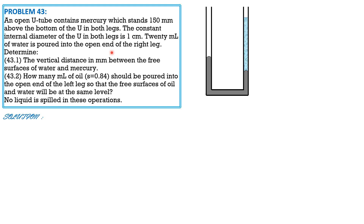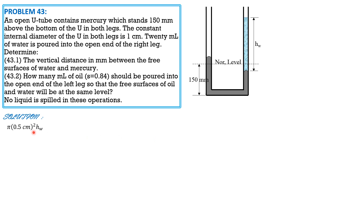For the solution: the normal level has mercury at 150 mm from the bottom in both legs. Since the legs have equal cross-sectional area, the rise in mercury on one side equals the fall on the other. We compute the height of water h_w: volume = π r² × h_w = 20 mL = 20 cm³. With r = 0.5 cm, solving gives h_w = 25.46 cm.